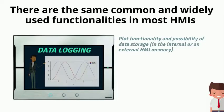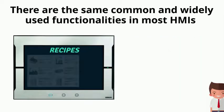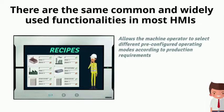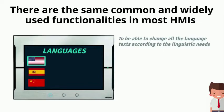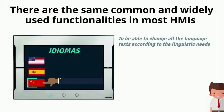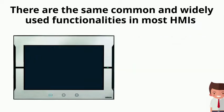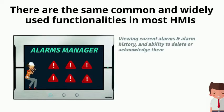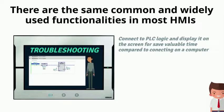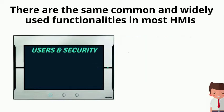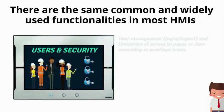Here are some common and widely used HMI functions. Data Logging captures process data over time. Recipe management allows the machine operator to select different pre-configured operating modes according to production requirements. Language switching enables changing all on-screen text according to linguistic needs. Alarm Manager provides viewing of current alarms and alarm history. Troubleshooting connects to PLC logic and displays it on screen, saving valuable time.